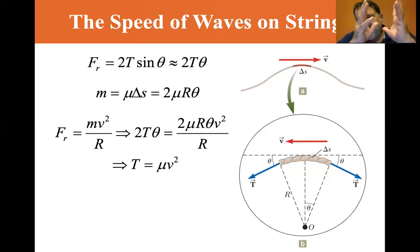So the force is mass times acceleration. What is the acceleration? It's the centripetal acceleration that's pulling the string back down, which is v squared over R. So the force from that top equation is 2T theta, the mass is 2mu R theta, and the acceleration is v squared over R. The twos cancel, the thetas cancel, the R's cancel. So all you're left with is the tension equals mu v squared.